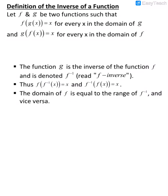Inverse functions. The definition of the inverse of a function says: let f and g be two functions such that f of g of x equals x for every x in the domain of g, and g of f of x equals x for every x in the domain of f. So if we take one function and plug it into the other and simplify and get x, and then turn that around and plug the first function into the second and get x, that tells us the two functions are inverses of each other.